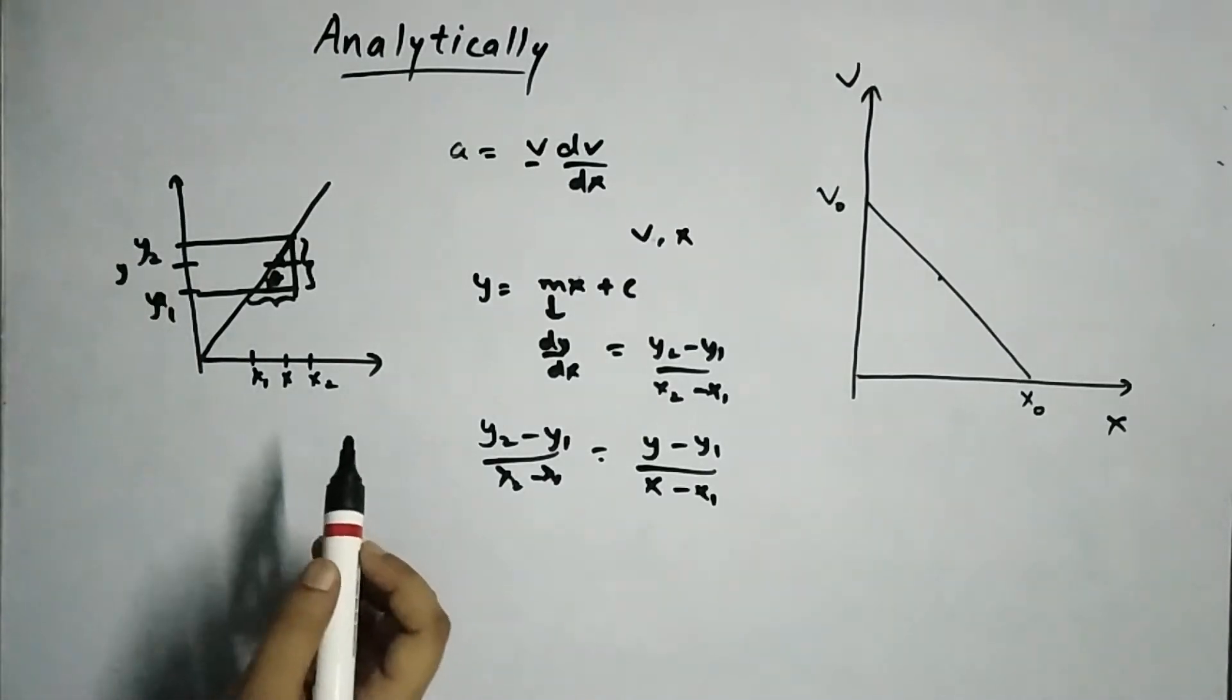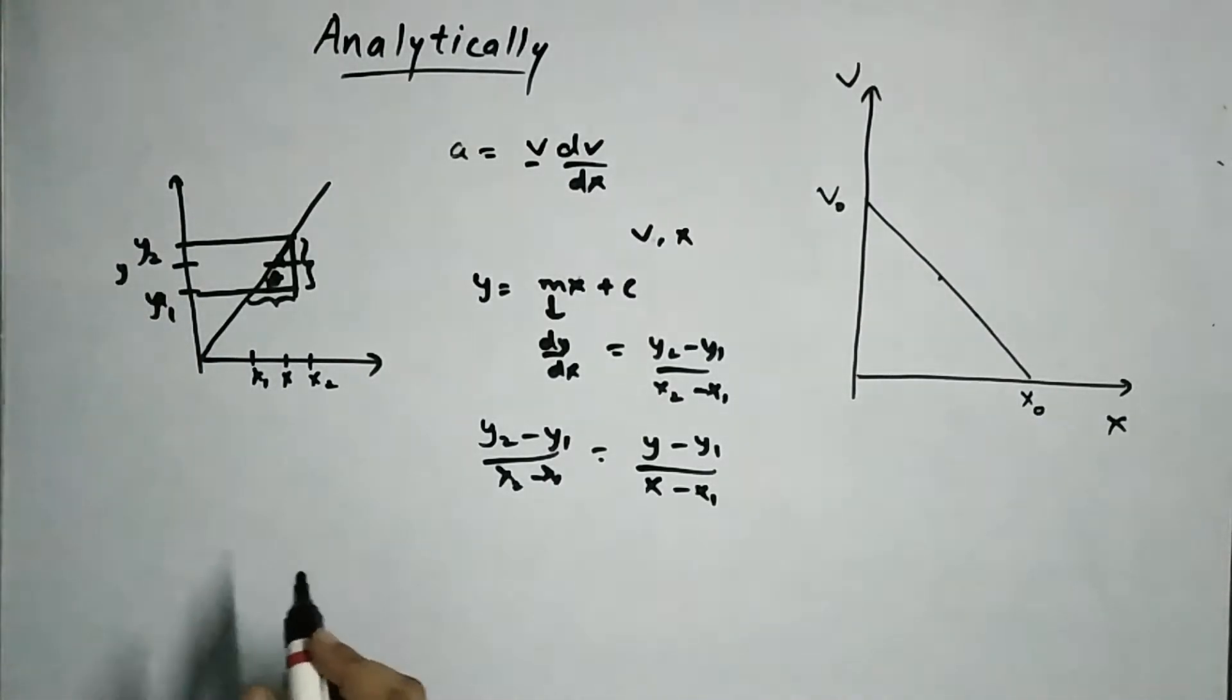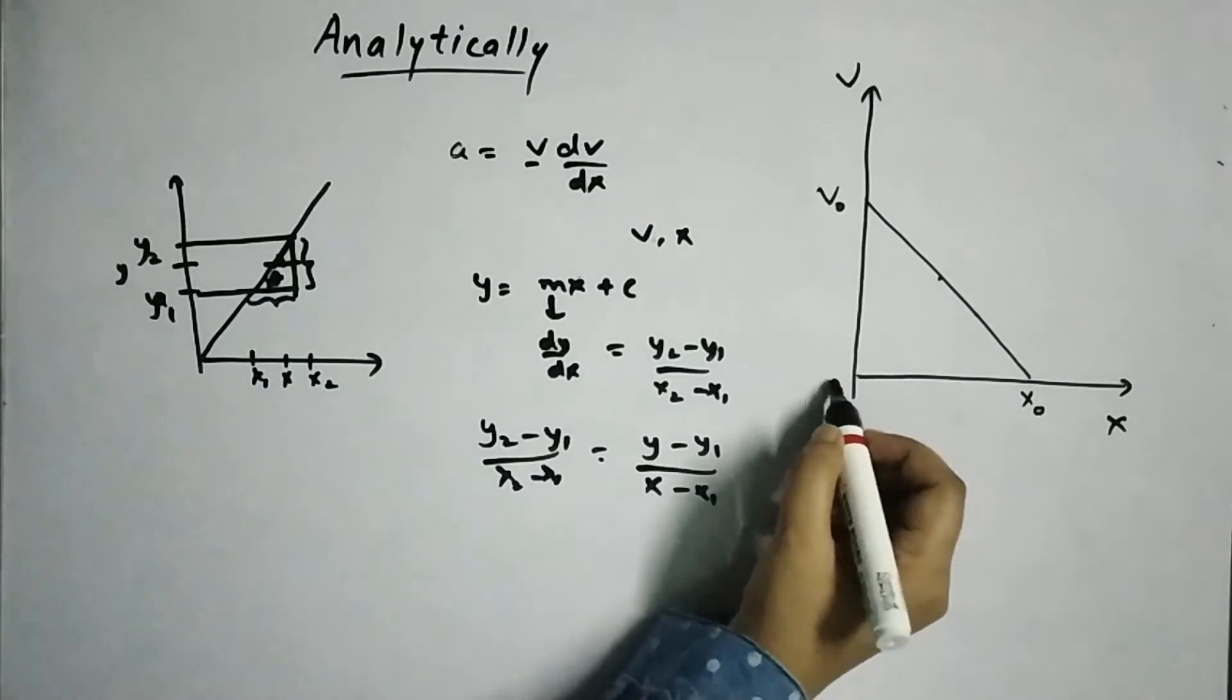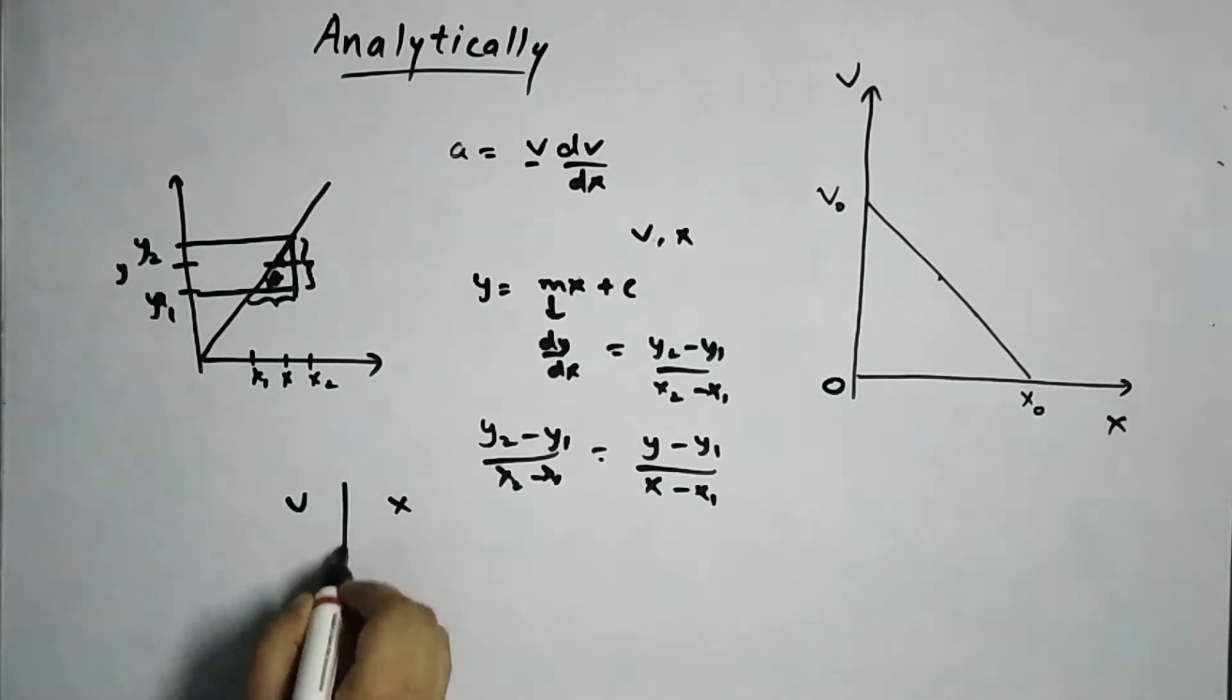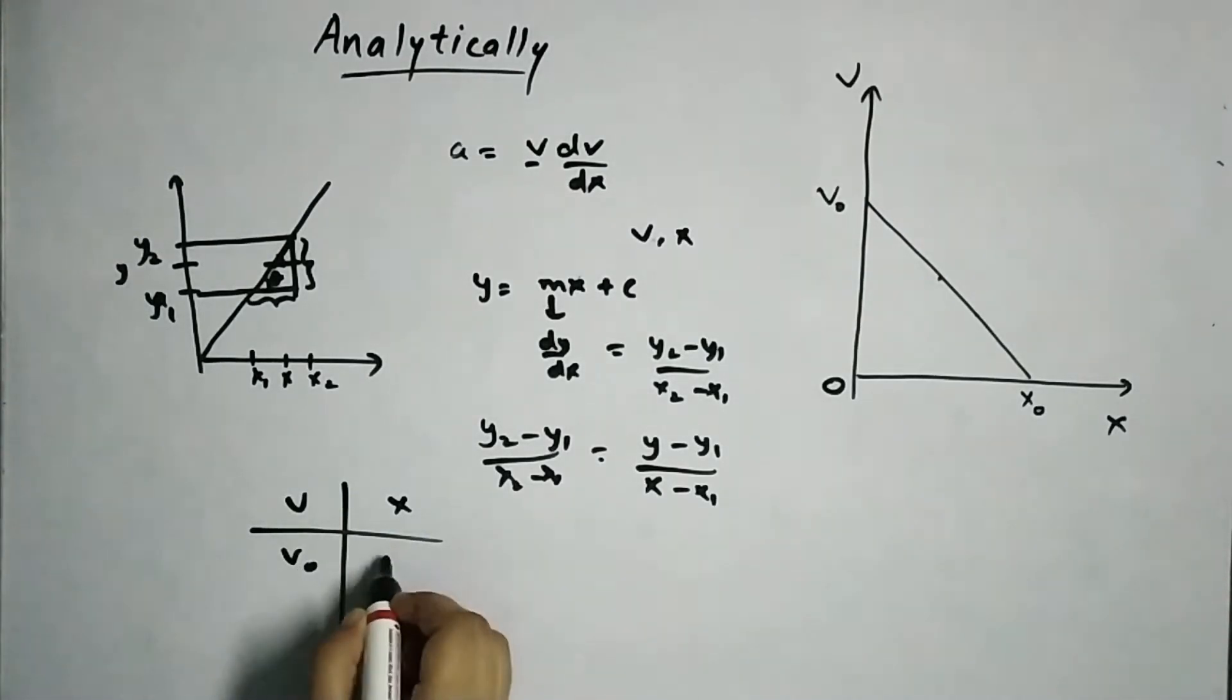Where y1, y2, x1, x2, these are all the given values. Now in our question, it is given that, it is given that, it is given that at v equals v0, x is 0 and at x equals x0,